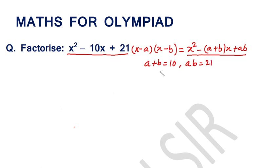Hence, we have to split this 10 such that the multiplication of the factors should be 21. Then we can write 21 is equal to 7 into 3.